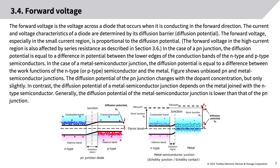The forward voltage is the voltage across a diode that occurs when it is conducting in the forward direction. The current and voltage characteristics of a diode are determined by its diffusion barrier, or diffusion potential. The forward voltage, especially in the small current region, is proportional to the diffusion potential. In the high current region, forward voltage is also affected by series resistance.